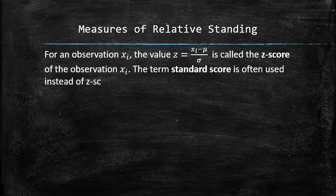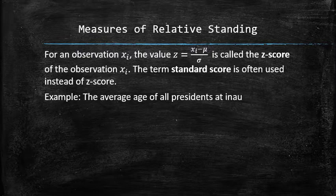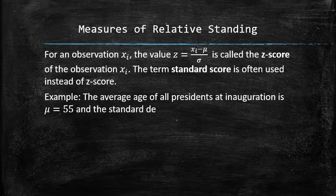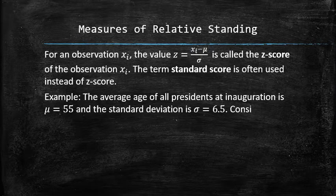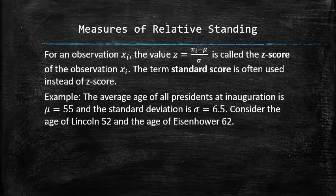The term standard score is often used instead of z-score. For example, the average age of all presidents at inauguration is 55 and the standard deviation is 6.5. Consider the ages of Lincoln, which is 52, and of Eisenhower, which is 62.